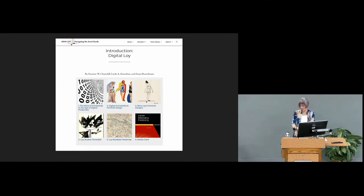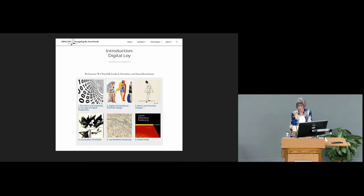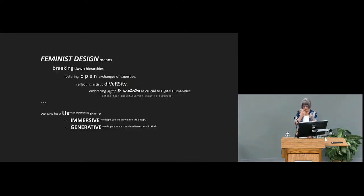When we began this project in 2014, we developed the principles of feminist design. 'To give design its due is a feminist act,' we declared. It involves recognizing readers as vital partners in the scholarly endeavor and embracing style and aesthetics as crucial to digital humanities — not just making websites look pretty, but considering the audience's needs and interests, meeting them where they are, and inviting them to participate in humanities research. Feminist design also entails rethinking the processes of generating and disseminating knowledge.